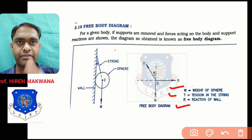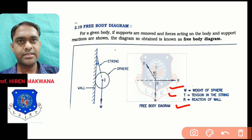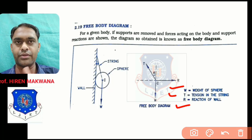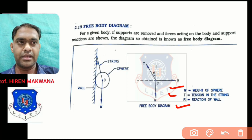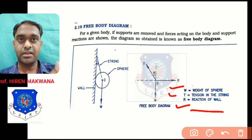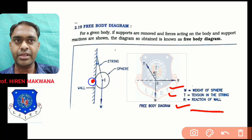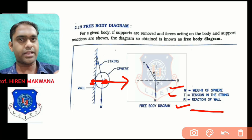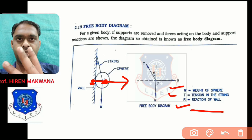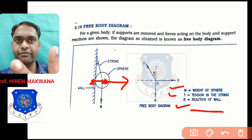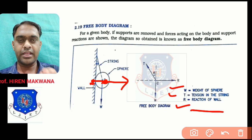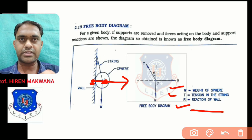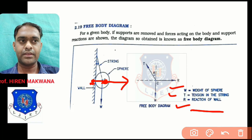Remember three things: first, weight is always vertically downward from the center. Second, tension is always acting in the rope, towards the fixed point from the center. Third, the reaction of the wall always starts from the contact point and passes through the center of the sphere. This is the free body diagram.